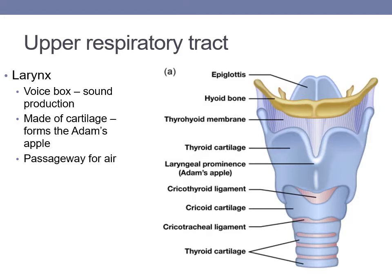The vocal cords are in the larynx, which is a passageway for air. It is made of nine pieces of cartilage to protect and support the delicate tissue beneath. The thyroid cartilage is the uppermost and largest piece of cartilage that comes to a point, forming the Adam's apple. The larynx is also the last structure that makes up the upper respiratory tract.